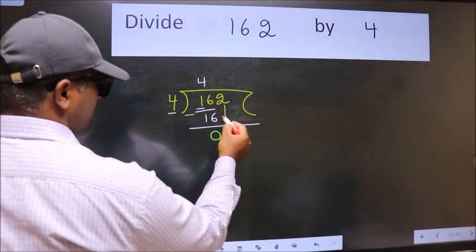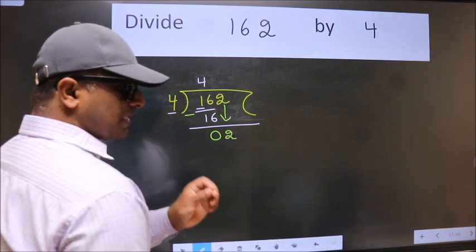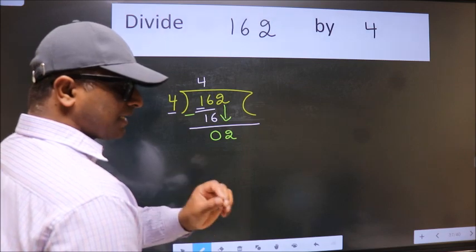After this, bring down the beside number. So 2 down. After this step, the mistake happens and the mistake is this.